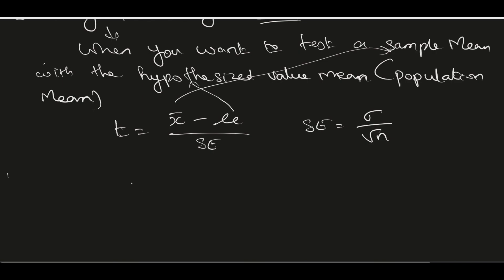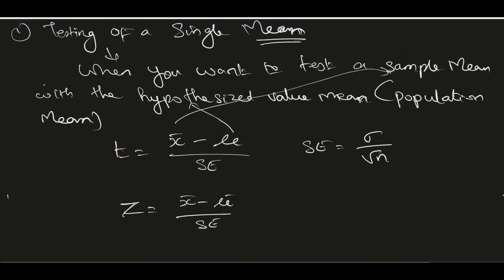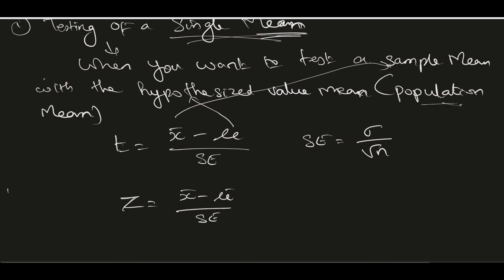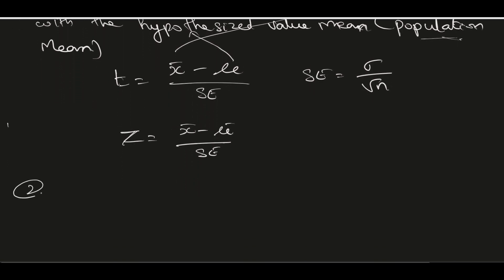You can also go for a z-test if the number of observations is very large, say more than 100. In that case, you will use the same formula but check the z-test table. This is what you do when checking a single sample mean against the hypothesized population mean.